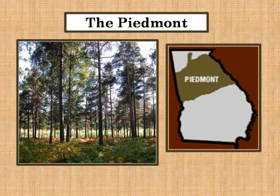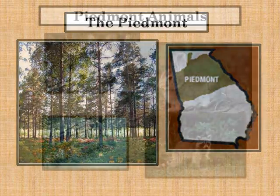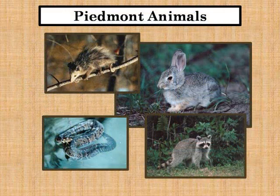The Georgia Piedmont is between the Blue Ridge Mountains and the upper coastal plains, made up of low hills and narrow valleys. The Piedmont region makes up one third of the land area of the state of Georgia.